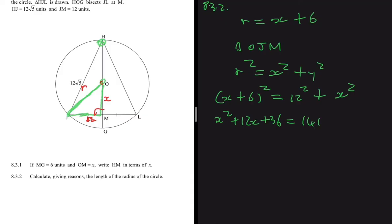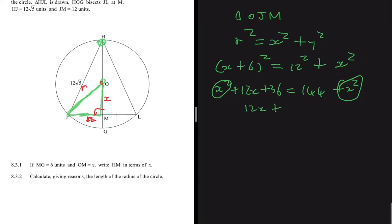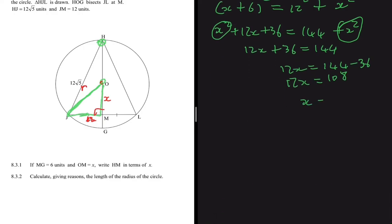The x squared terms cancel, leaving 12x plus 36 equals 144. So 12x equals 144 minus 36, which is 108. Dividing both sides by 12 gives x equals 9. Since the radius equals x plus 6, the radius equals 9 plus 6, which is 15 units.